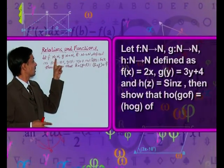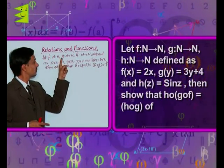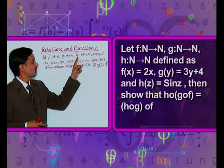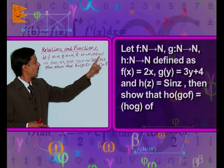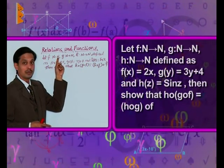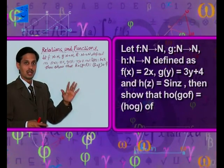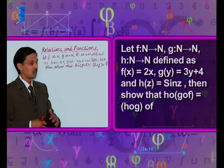Here f is the function from natural to natural, g is the function from natural to natural, h is the function from natural to natural. Defined as natural to natural means domain and co-domain in all three functions are natural.